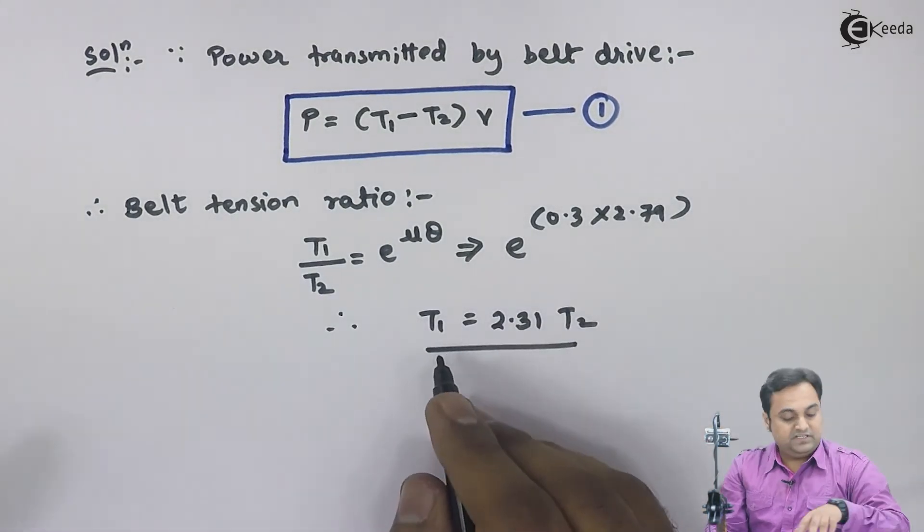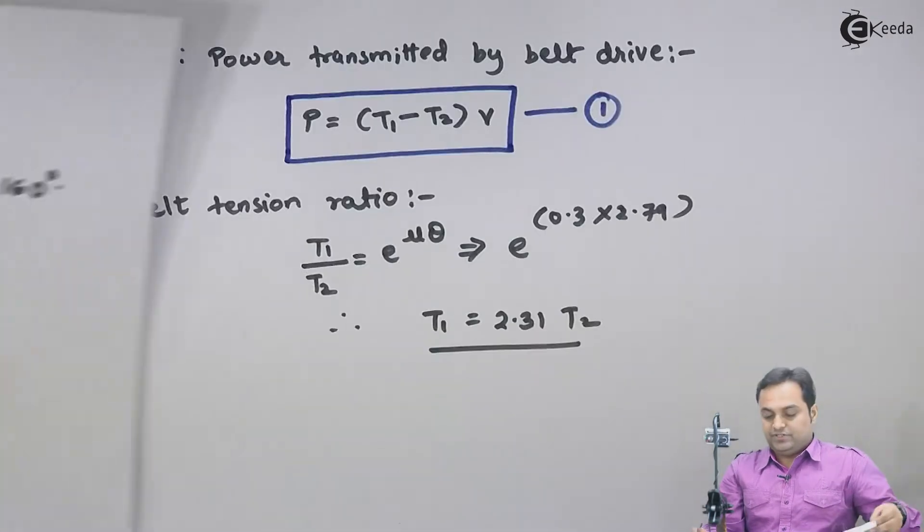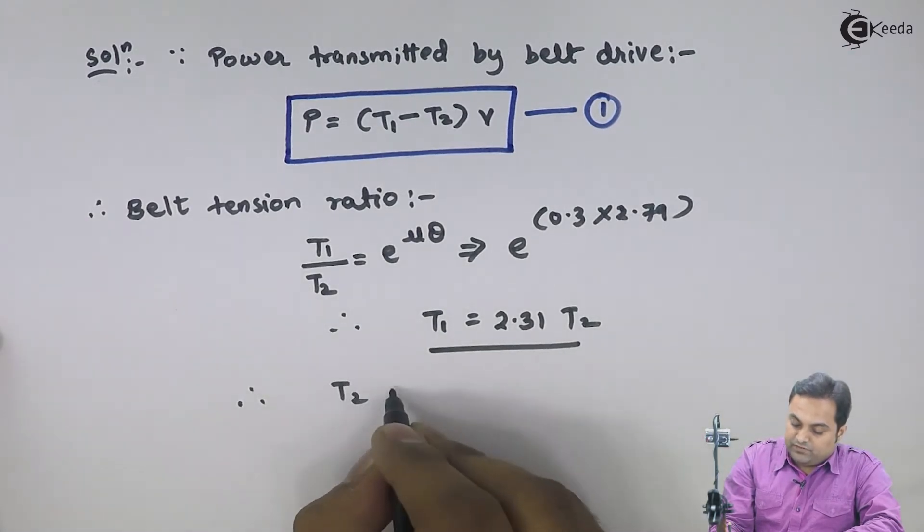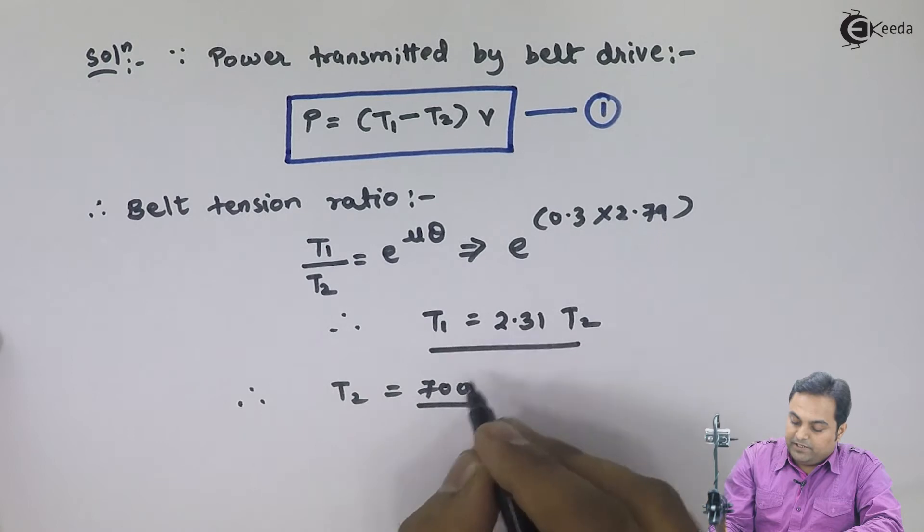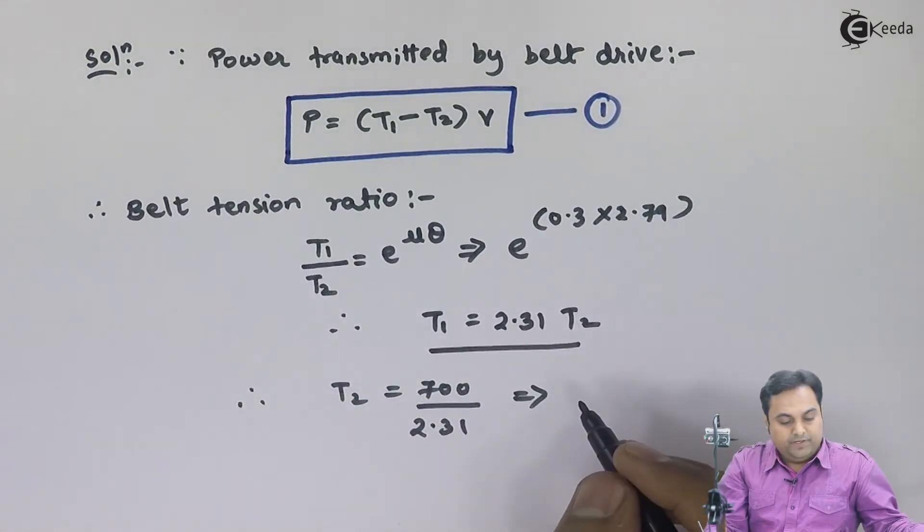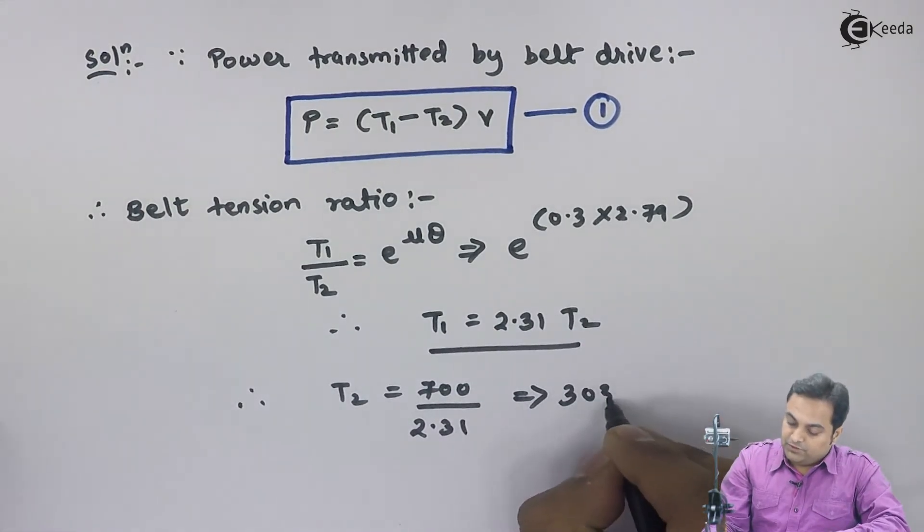As we see in this problem, T1 is given, that is the maximum tension. Therefore, I will write down T2 equals 700 divided by 2.31. So T2 value comes out to be 303.03 Newton.